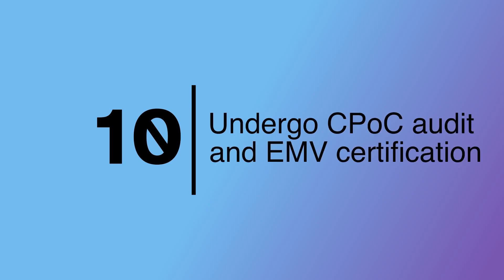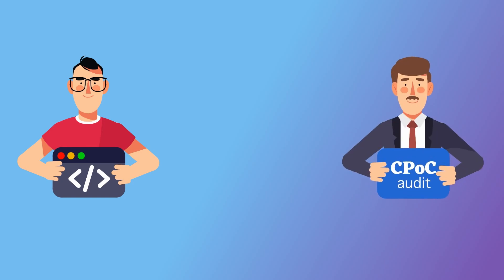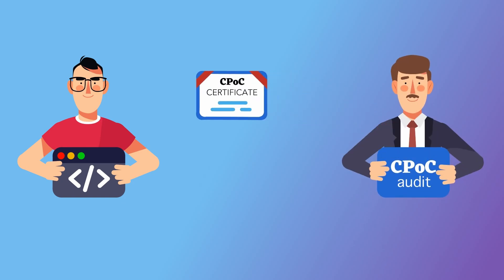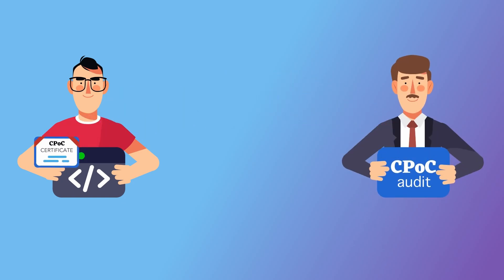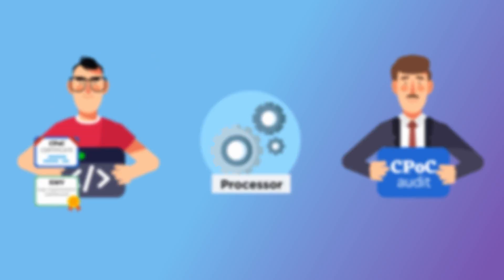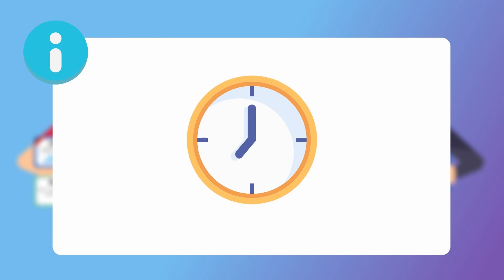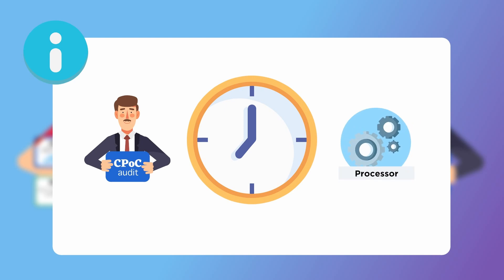Step 10: Undergo CPOC Audit and EMV Certification. Once the development is completed, you must go through CPOC certification with an auditor and certify EMV logic implementation with the processor. Keep in mind that the time frame of this step is difficult to forecast because a lot will depend on the respective auditor and processor.